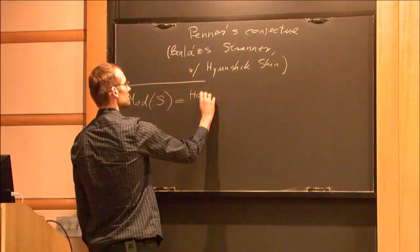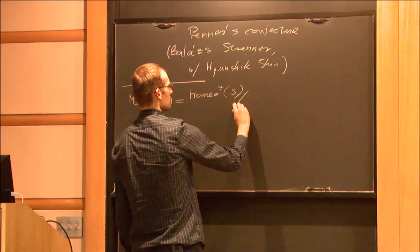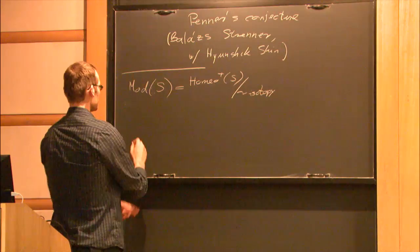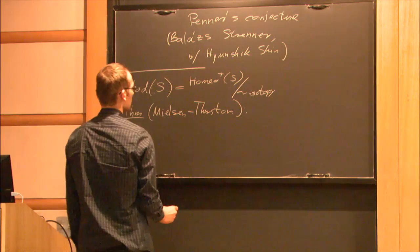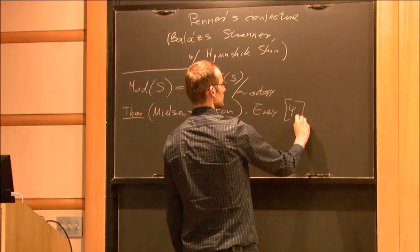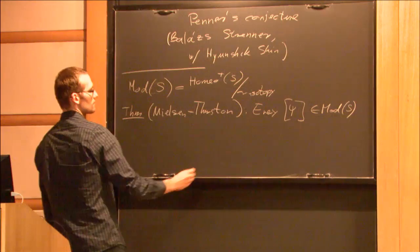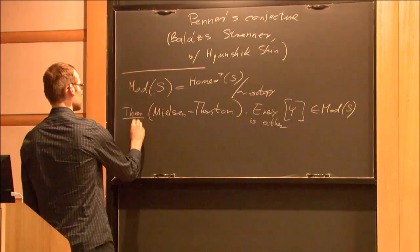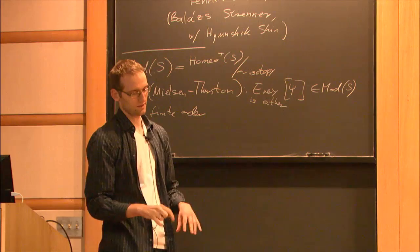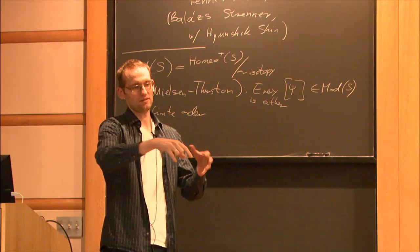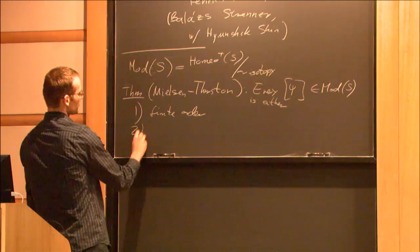We're interested in the mapping class group of a surface S, which is the group of orientation-preserving homeomorphisms up to isotopy. The basic fact by Nielsen and Thurston is that every element of the mapping class group is either finite order — for instance, you can imagine a surface with one hole in the middle and several holes around, embed it in Euclidean space and apply a rotation — or second, reducible.